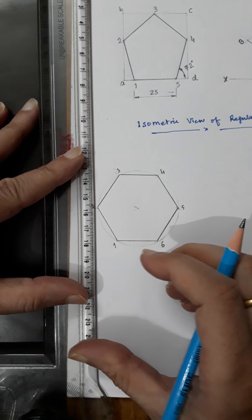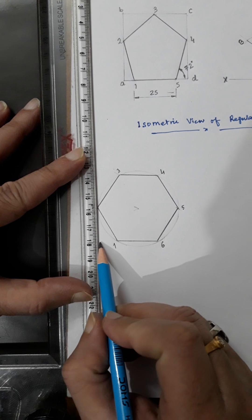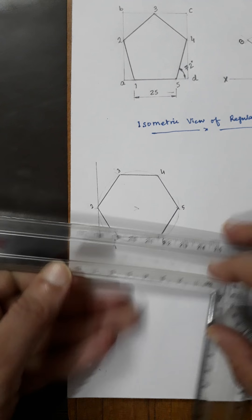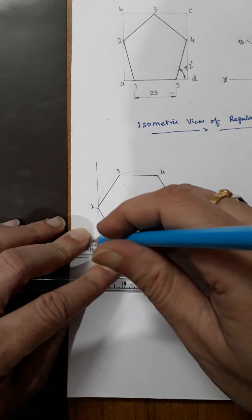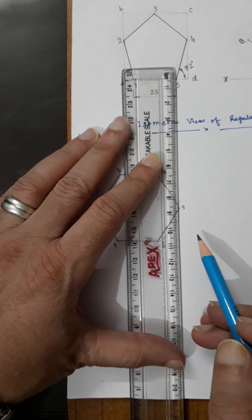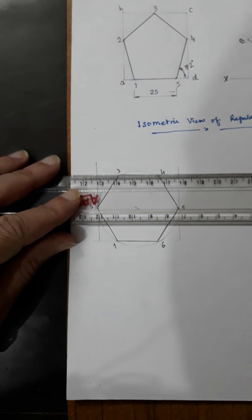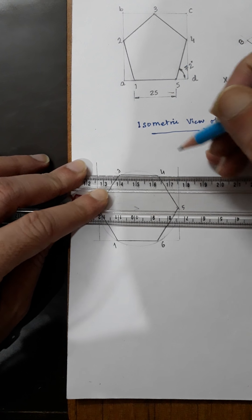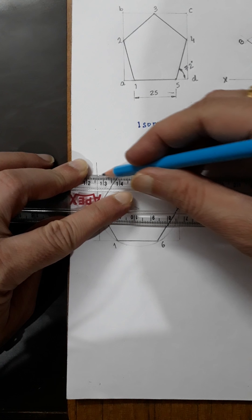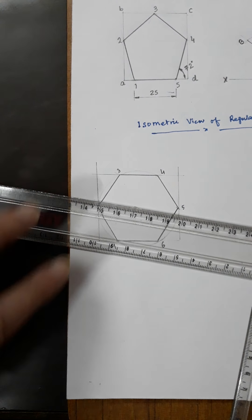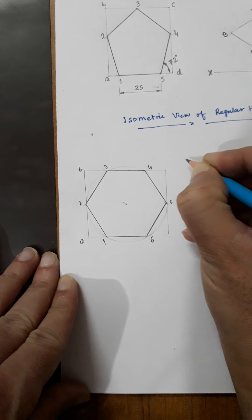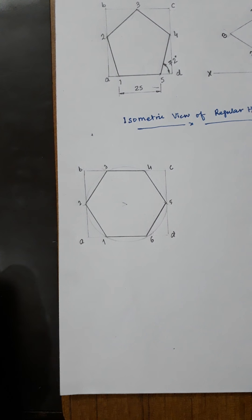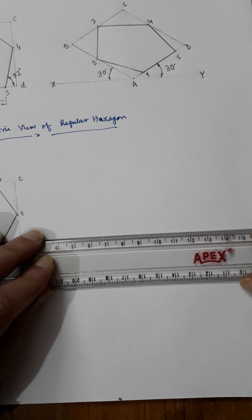Now you have to draw the outside rectangle. Simply mark the outside rectangle by joining the horizontal and vertical lines. You can name the four sides of the rectangle A, B, C, and D. Now again you have to use a reference line.